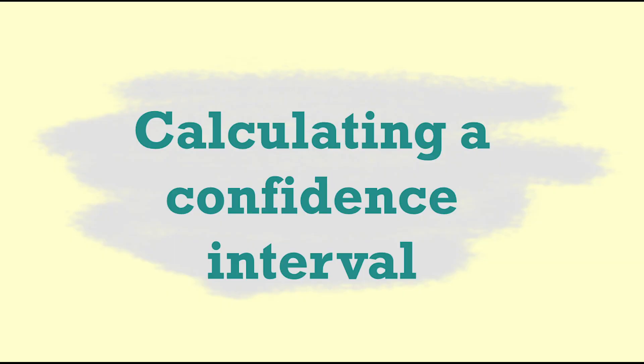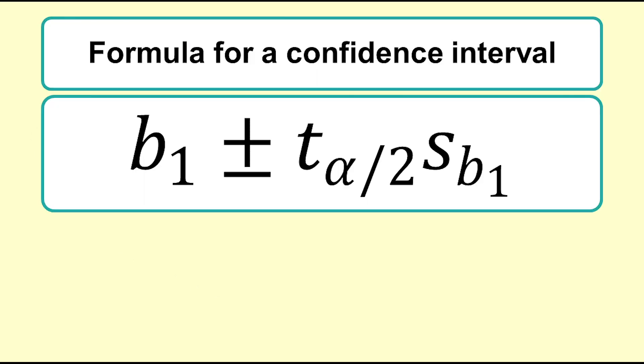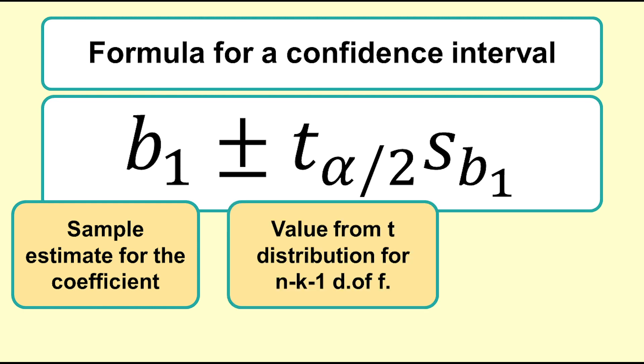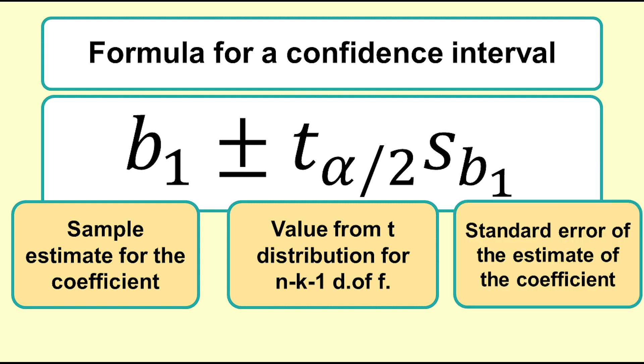Calculating the confidence interval. The Excel output tells us what we need to know, but it can be helpful to know where the values come from. The formula for calculating the confidence interval for a regression coefficient is B1 plus or minus T times the standard error of B1. B1 is the sample estimate for the coefficient. T is the value from a T distribution with N minus K minus 1 degrees of freedom. And SB1 is the standard error of the estimate of the coefficient.